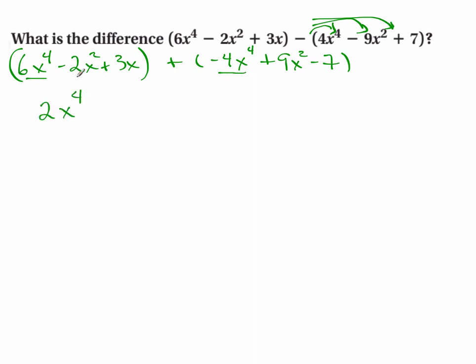And then collect like terms like we did before. 2x⁴ - 2 + 9 + 7x² plus 3x - 7.